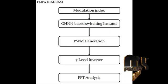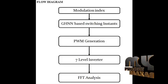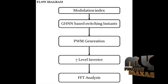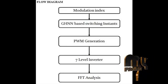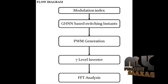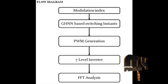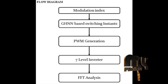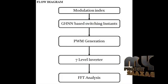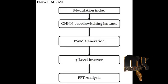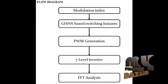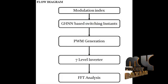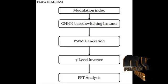The PWM generation block consists of triangular wave generation and the accepted switching instances. The switching instances are compared with the triangular wave with an amplitude of 1.57 radians. Finally, the PWM wave is generated for the positive half cycle, and this PWM wave is given to a transport block that converts the PWM pulses for the negative half cycle.